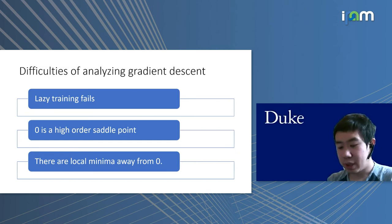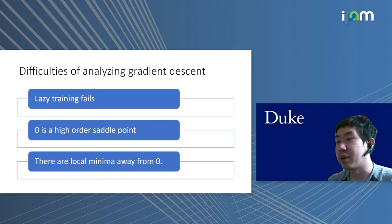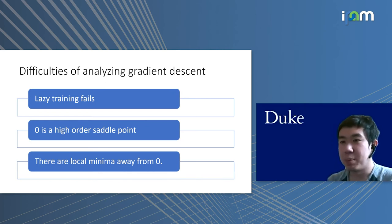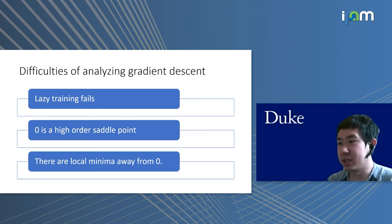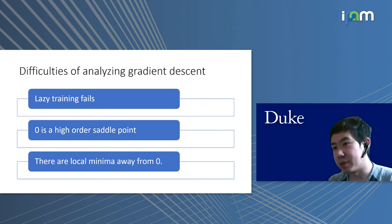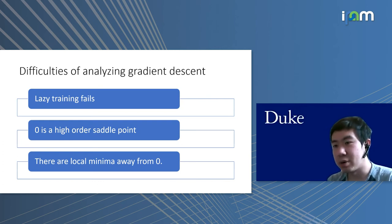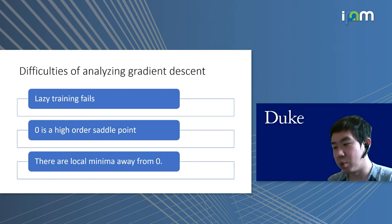In the setting of running gradient descent for tensor decomposition, there are actually a lot of difficulties, which is why we are analyzing this problem. There are mostly three problems: first, lazy training fails horribly in gradient descent for overparameterized tensor decomposition; second, zero is a higher-order saddle point; and third, there are many local minima away from zero, so we need to do something else to escape them.